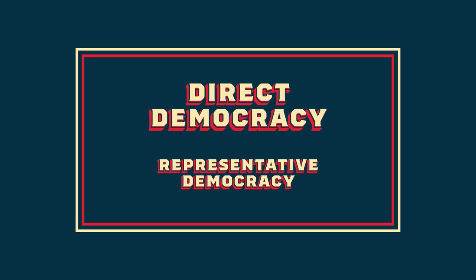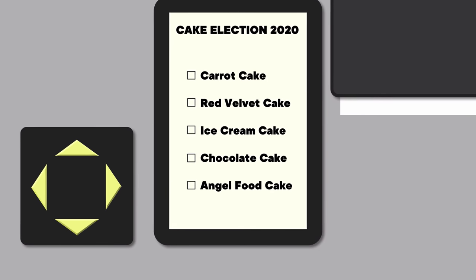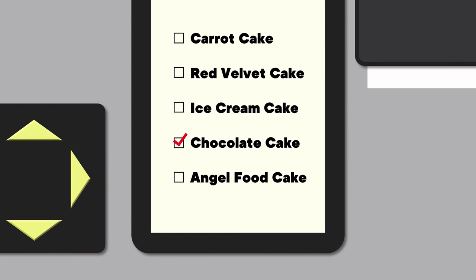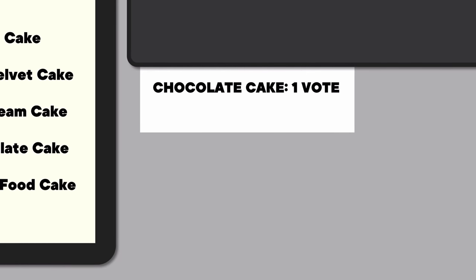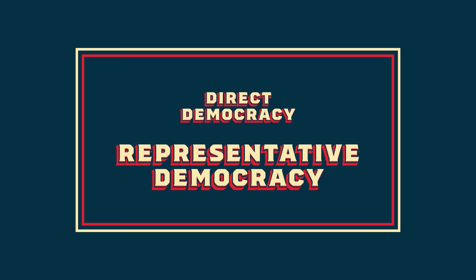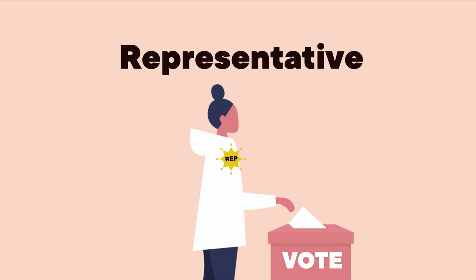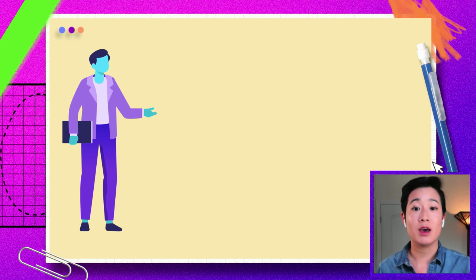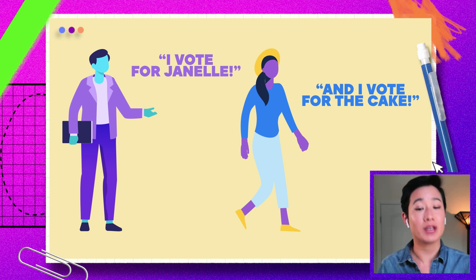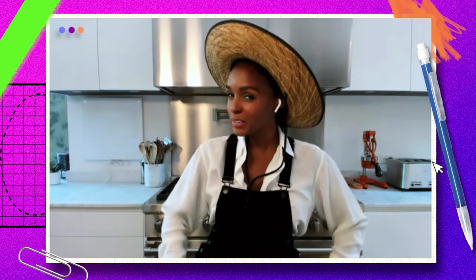Direct democracy is where citizens vote on issues directly. If we were using direct democracy to decide what kind of cake I eat, I'd say I vote for chocolate cake, and that vote would be cast. A different way of organizing things is called representative democracy. In a representative democracy, you don't vote on things directly. Instead, you vote for a person — your representative — who you trust to make those votes for you. If we were using representative democracy to decide what kind of cake I eat, I'd say I vote for Janelle, and then I trust Janelle to pick my flavor of cake. Well, you're going to get a red velvet. I trust you — even if I didn't, I'd still have to. Tastes like freedom.